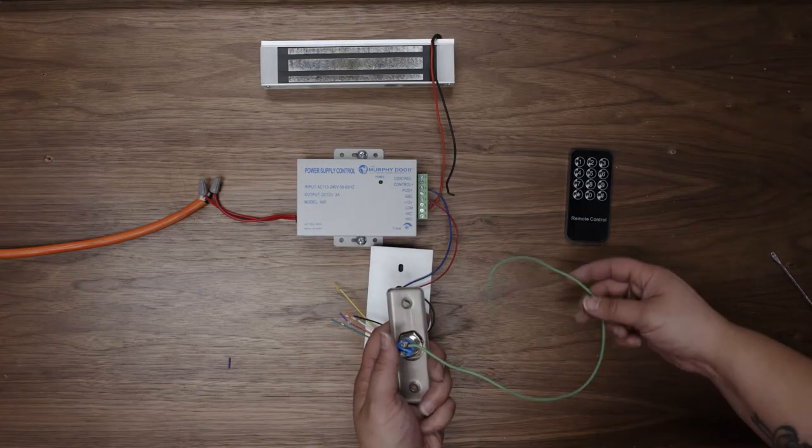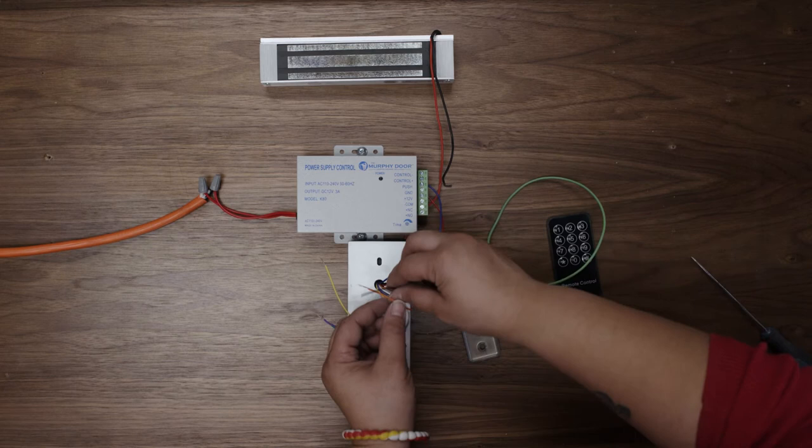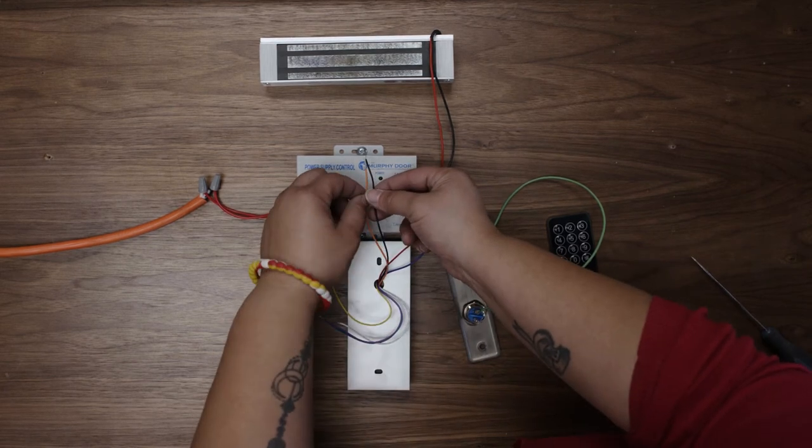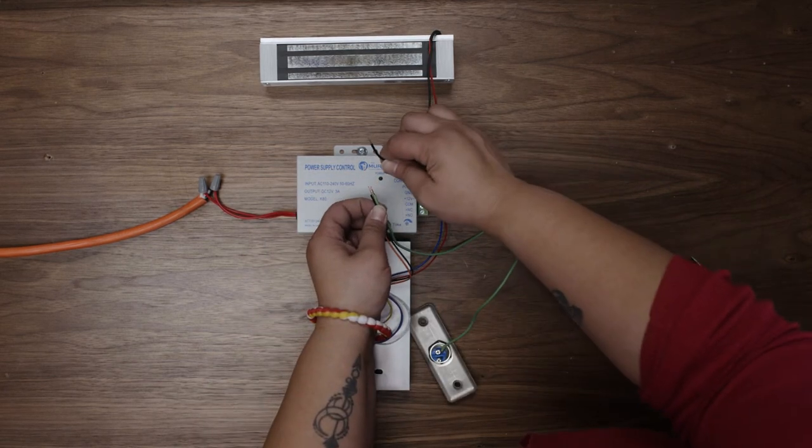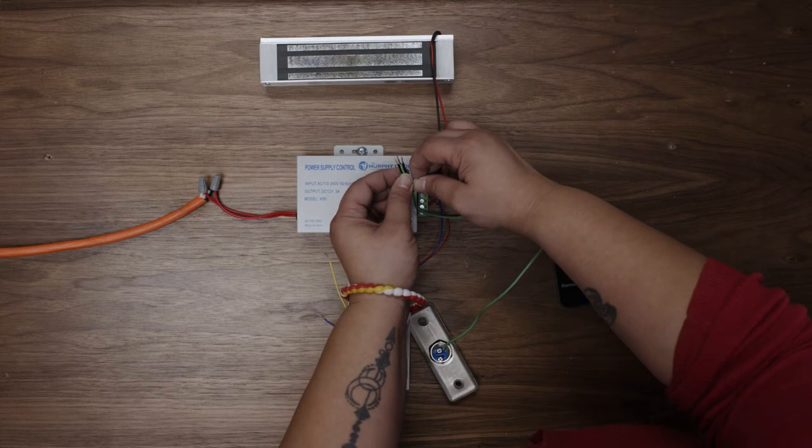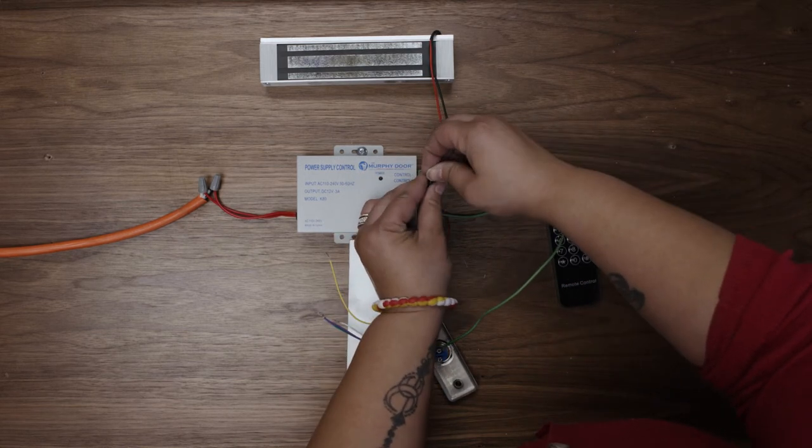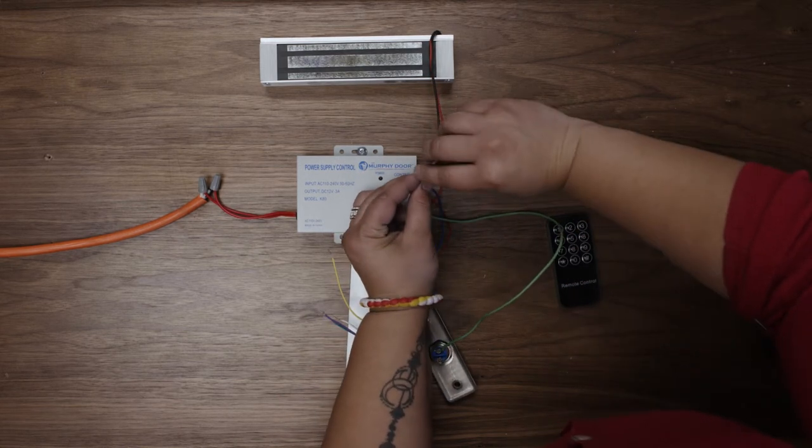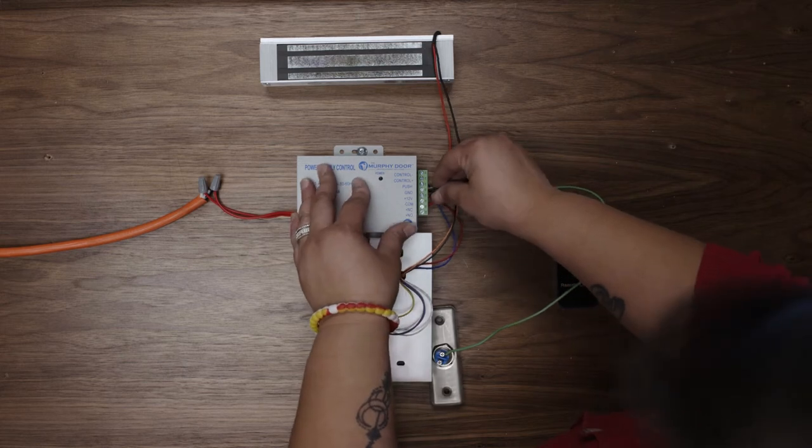Now wire one of the terminals on the push button with the black and orange wires from the scanner and the black wire from the magnet. These all go into the ground terminal on the power supply.